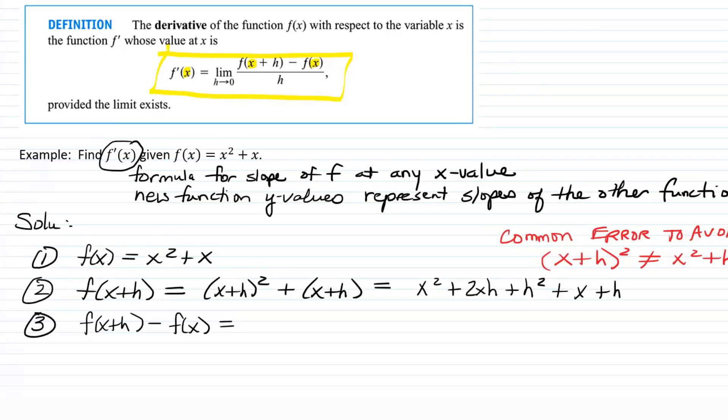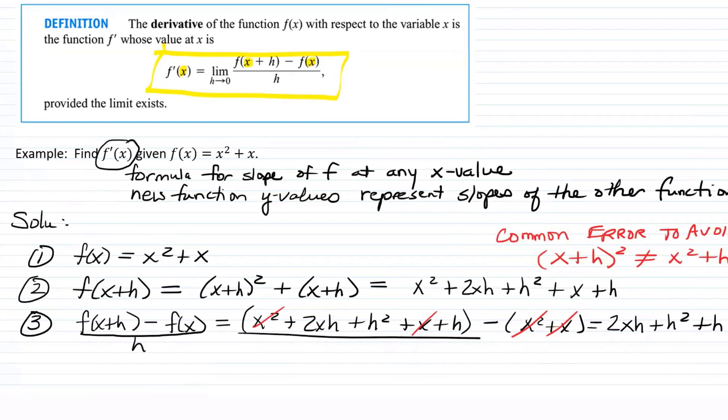And what do you get? So you get x squared plus 2xh plus h squared. And then we still have plus x and plus h. All right, so now we're going to take what we found in step two and subtract step one. So we have x squared plus 2xh plus h squared plus x plus h minus x squared plus x.